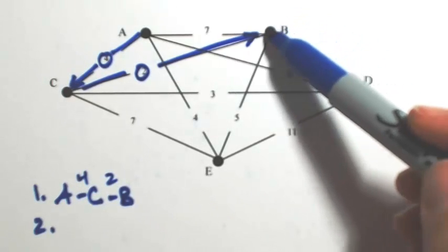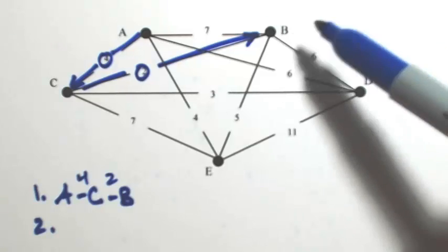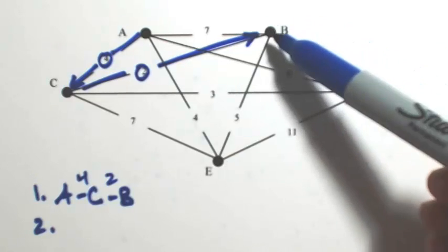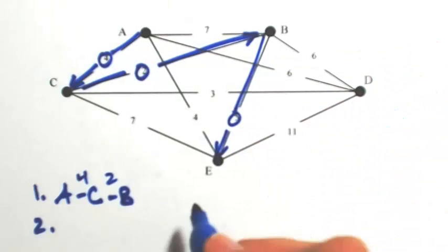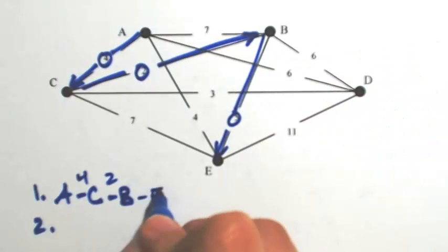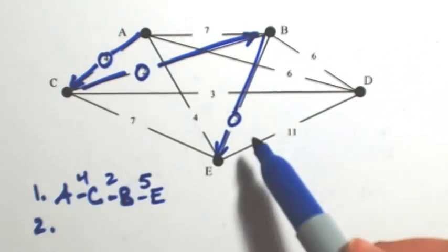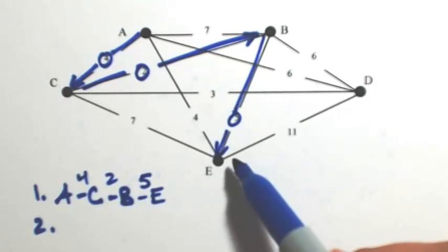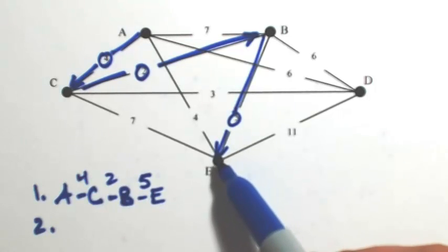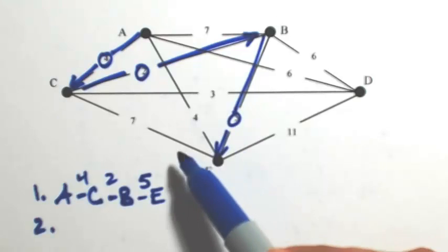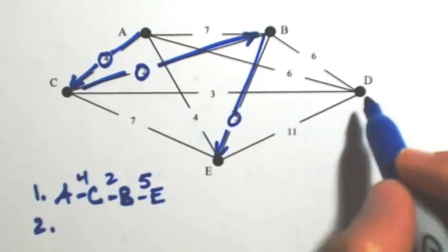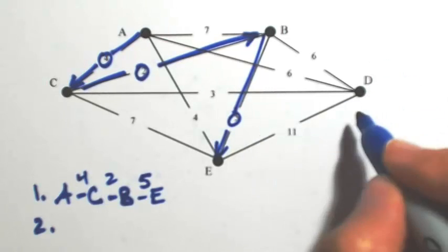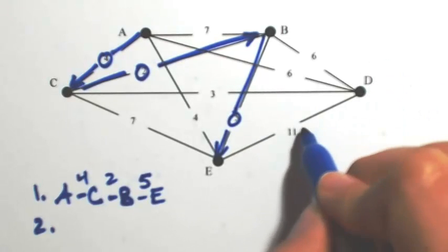From B, we can't go back to A yet because we haven't visited all vertices. So we choose between the edge of cost 5 or 6. The 5 is cheaper, so we go to E. From E, we can't go to C or A without hitting vertices twice while skipping D, so we need to go to D next.